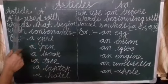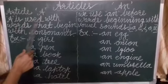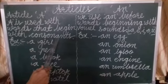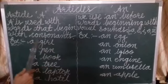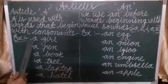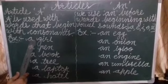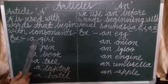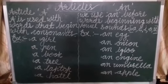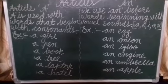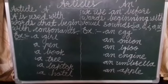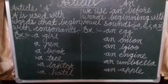Article A. A is used with words that begin with consonants. There are 21 consonants: B, C, D, F, G, H, J, K, L, M, N, P, Q, R, S, T, V, W, X, Y, Z. These are consonants.